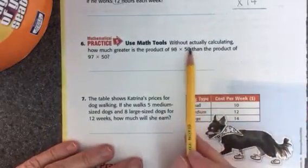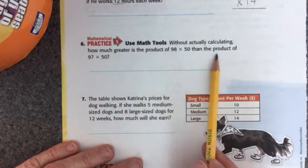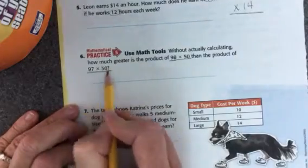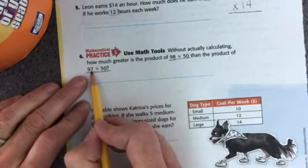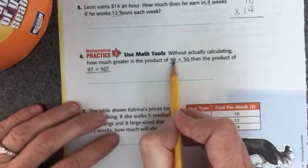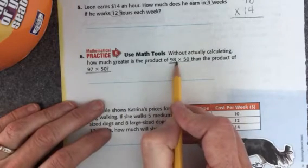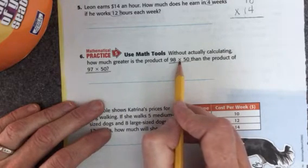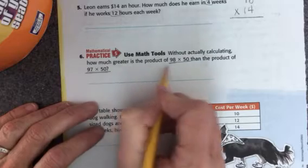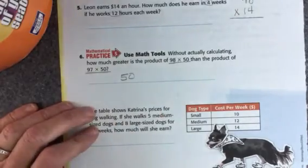We're looking at number 6. Without actually calculating, how much greater is the product of 98 times 50 than the product of 97 times 50? If I look at this, 98 times 50 and 97 times 50, I know that this means I'm timesing by 50 97 times, and this one means I'm multiplying by 50 98 times. Since 98 is 1 more than 97, I know that I'm multiplying by 50 one more time greater on this one. Which tells me that this answer here is going to be 50 times greater than this answer, and I could figure it out without even working it out.